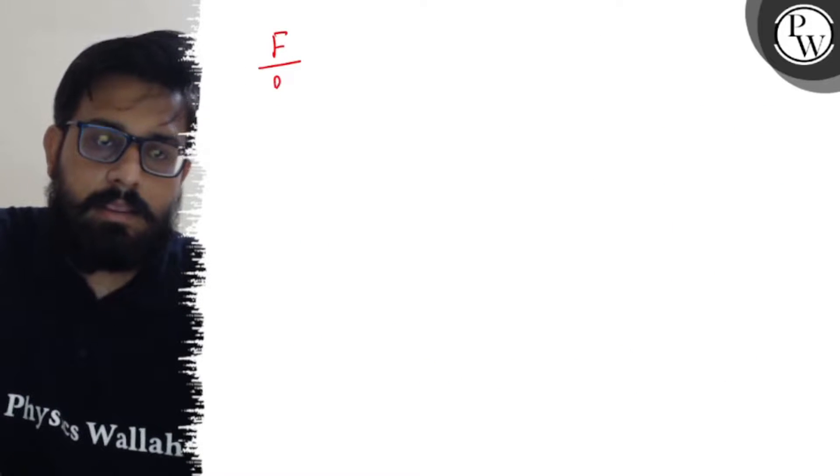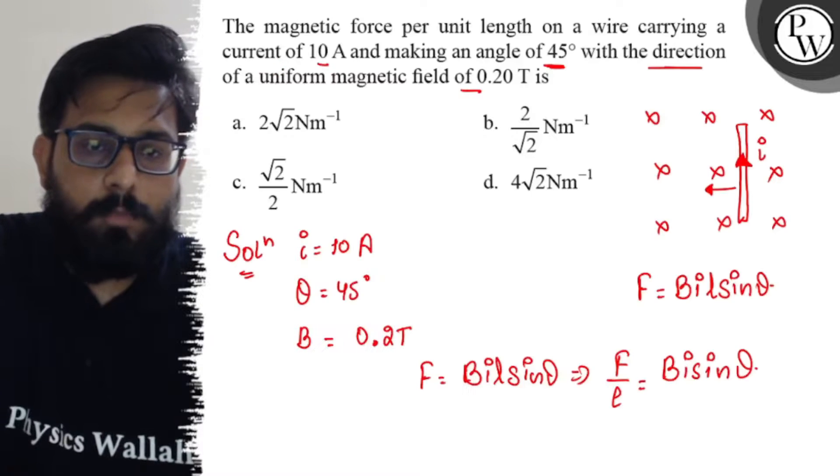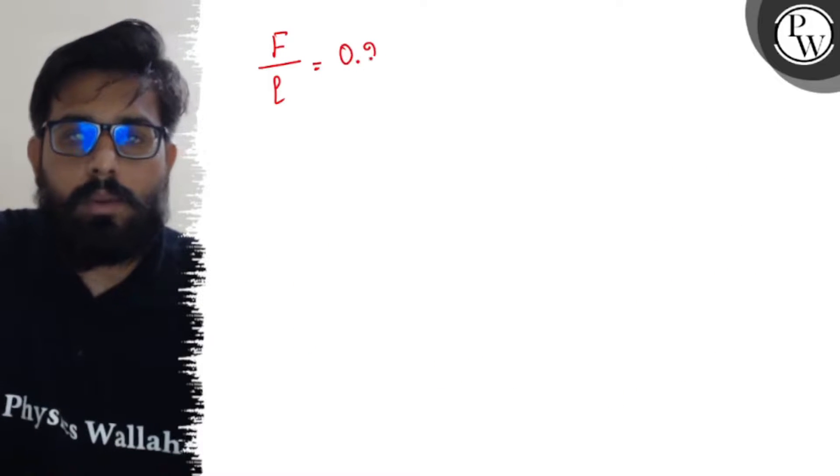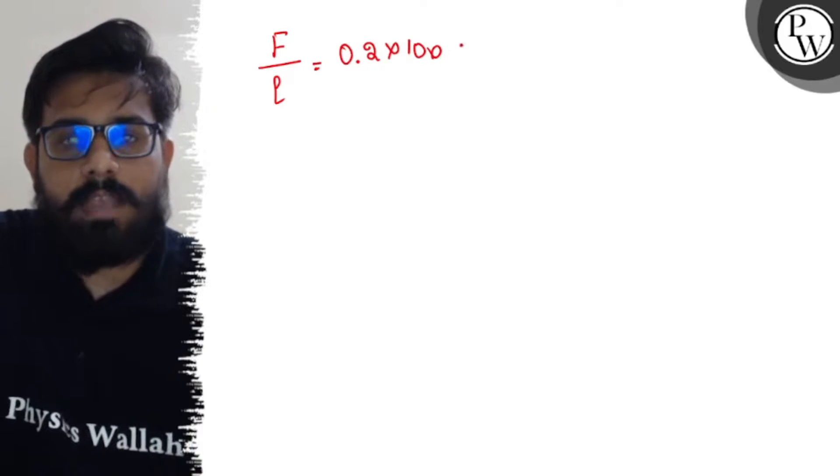So let's solve this. F/L equals, B value is 0.2, I value is 10. So 0.2 into 10 into sine 45 degree.